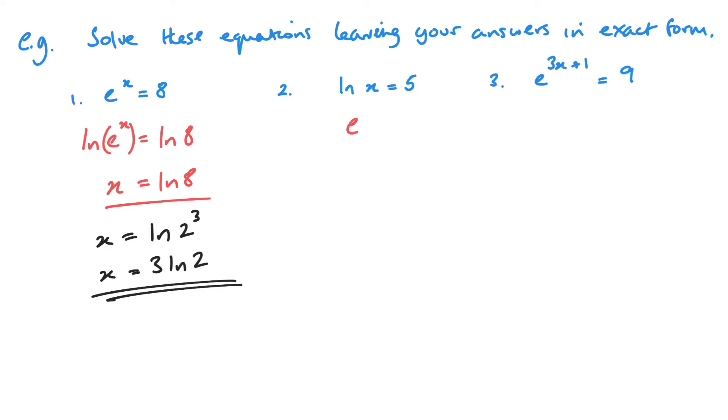So we have e to the ln x equals e to the 5. So that means that x equals e to the 5.